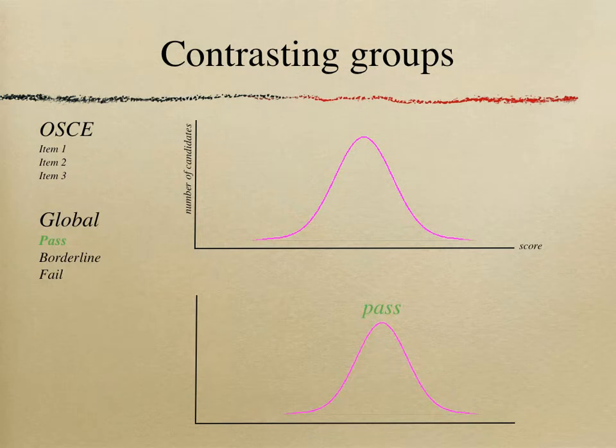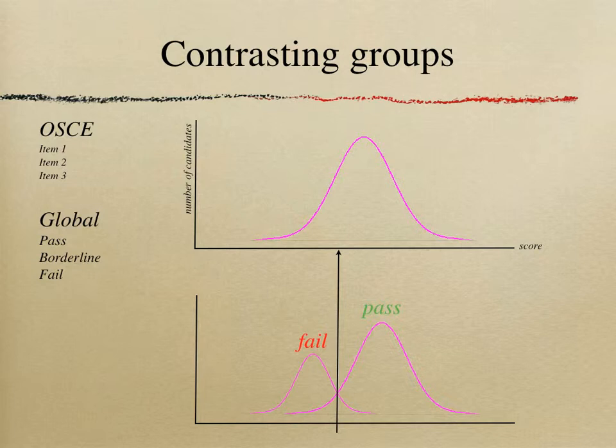From all the scores given to those considered a pass, you draw a subcategory curve, as you can see in the picture. You also draw another curve from the scores of those who failed. These two curves — of fail and pass — will intersect at a point, and if you draw a line from that intersection onto your main graph, it will hit the score line at a point which you can identify, and that becomes your pass score.